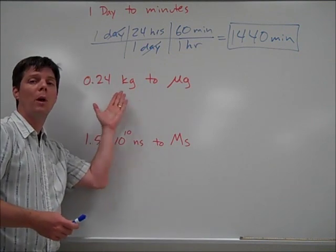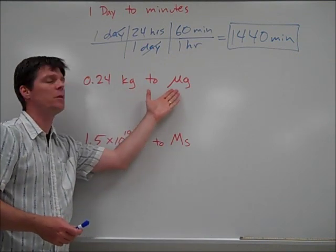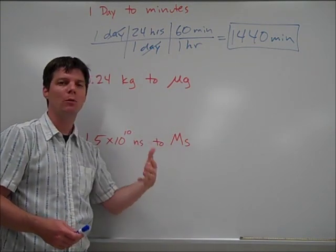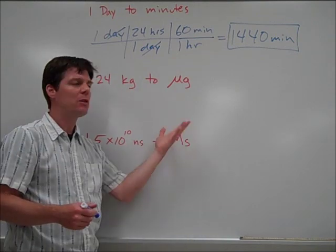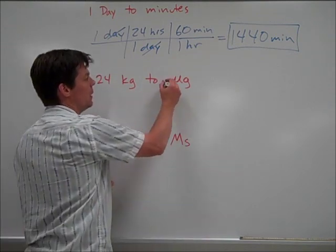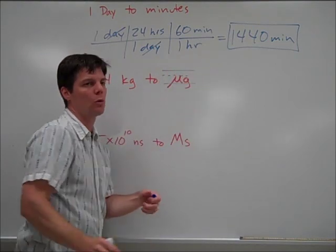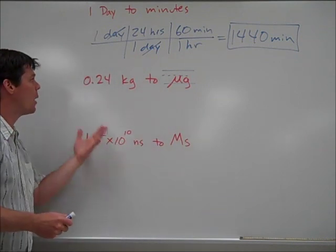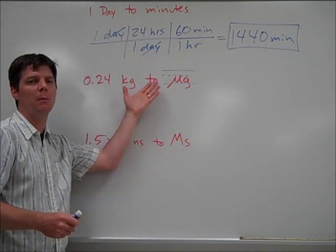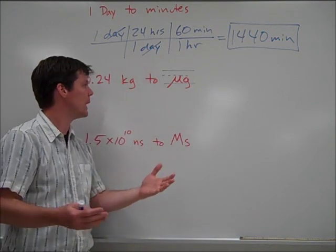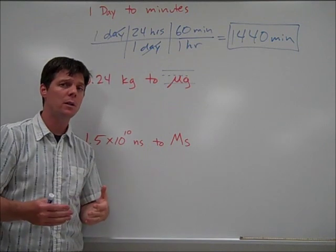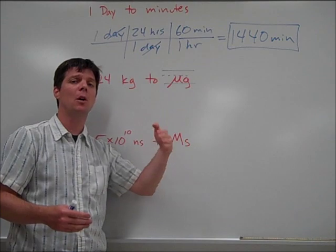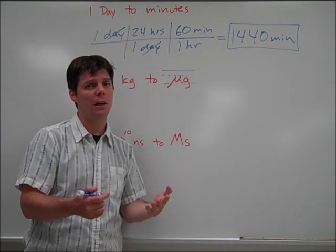Our next example will be to convert 0.24 kilograms to something called micrograms. This symbol is called mu. It means one-millionth, so a microgram is one-millionth of a gram. And in case you're wondering about the symbol, back when I was in elementary school, they taught us how to print with this paper with the lines. So the mu symbol would be printed like this. So I want to convert 0.24 kilograms to micrograms. Now, I don't have the relationship memorized, kilograms to micrograms. So what I want to do first is to convert from kilograms to grams, and then I'll use a second step to go from grams to micrograms. So let's take a look at how we would set that up.